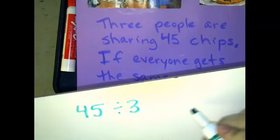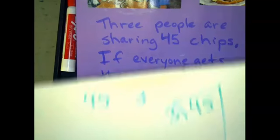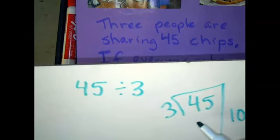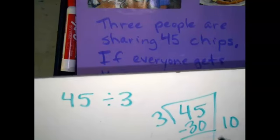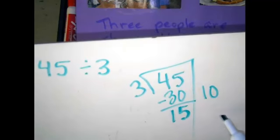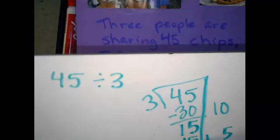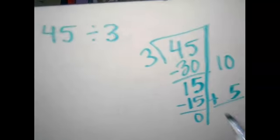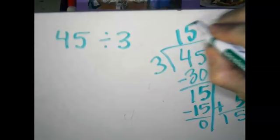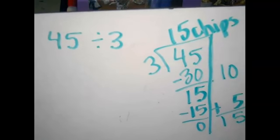I'm going to use the big seven method. I know an easy one here — ten times three is 30. And another easy one: three times five is 15. Once I add those two up, I get 45, so each person is going to get 15 chips. Good one, Jennifer! Bye-bye!